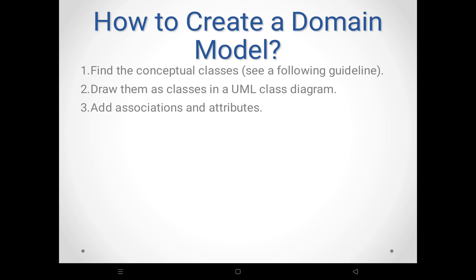How do you create a domain model? There are three important steps. The first step: you have to find the conceptual classes — an idea, thing, or object. The second step: draw the classes in a UML class diagram, where the conceptual classes are represented in UML notation. The third step: add associations and attributes. These are the three important steps for creating a domain model.